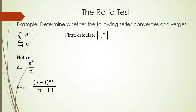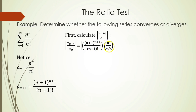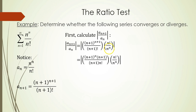First, let's calculate the absolute value of the ratio of a sub n plus 1 over a sub n. I have a sub n plus 1 written first, and then I'm dividing by a sub n. Remember, when you're dividing by a fraction, you're really multiplying by the reciprocal — so I'm multiplying by n factorial over n to the n. The goal is always to try and get things to cancel out.